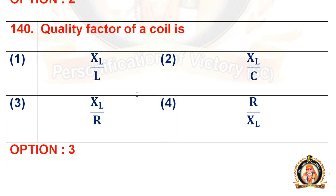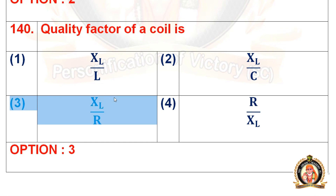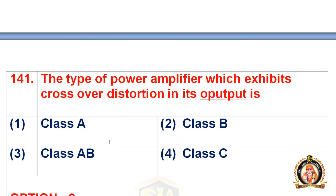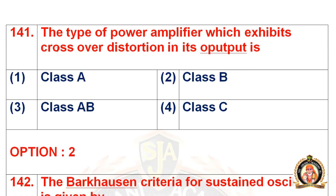Question 140: The quality factor of a coil is. Options are XL/L, XL/C, XL/R, and R/XL. The right option is option number 3, that is XL/R. The quality factor of a coil is the ratio of inductive reactance to resistance. For detailed solution, visit our YouTube channel Hygen Academy for all solutions.